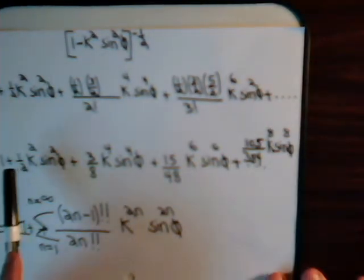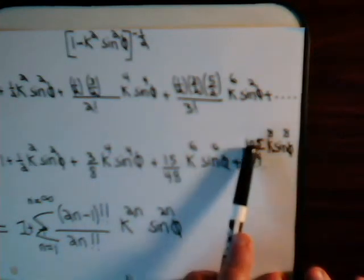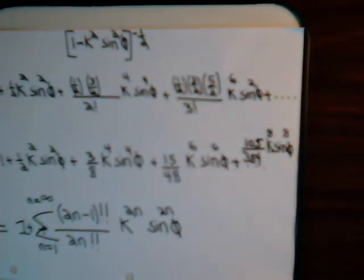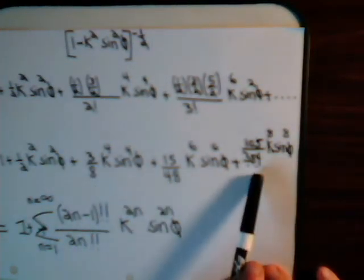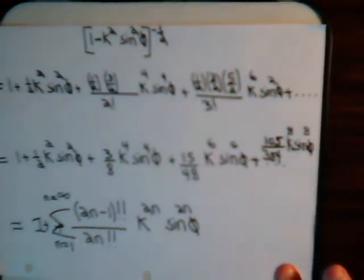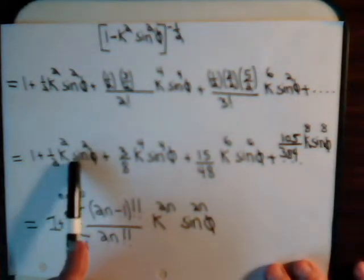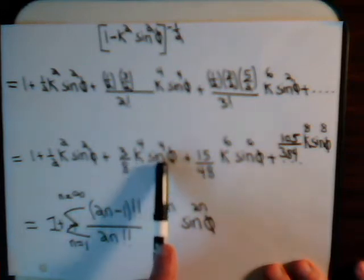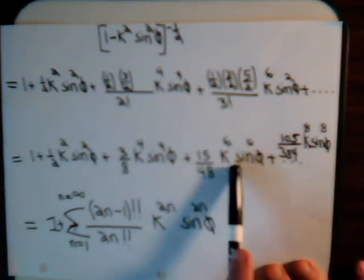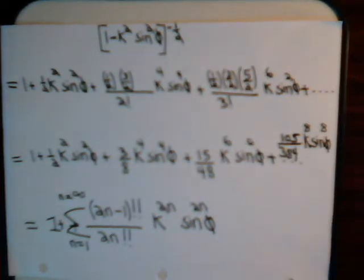Now, the next term then would be this would now be to the exponent of eight for the k and the sine phi term. This is 105 divided by 384. And it turns out that there is a pattern to this sequence, a convenient one. First of all, notice that what's in the numerator, one, three, fifteen, one hundred and five, those are all odd numbers. And what's in the denominator, those are even numbers. Now, to see the pattern that's involved, what we would do is, for this term, we'll have that correspond to an n equal one. This is for an n equal two, n equals three, n equals four.